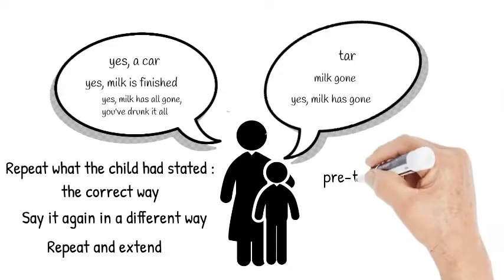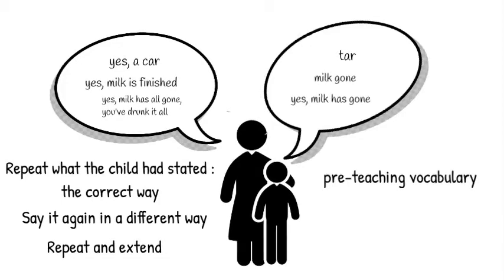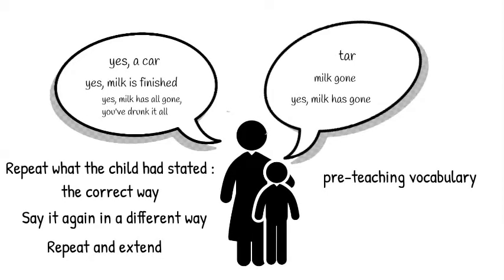Another technique is pre-teaching vocabulary. It's important to think about your choice of words. For younger children, these will probably be concrete words linked to what you can see or what you are doing and useful for early conversation. With other children, you may choose words which are useful in school or linked to their topic.